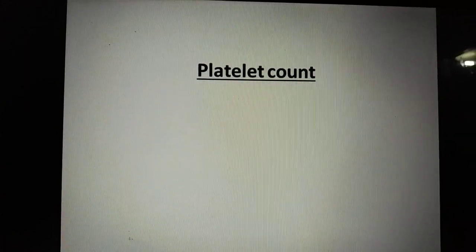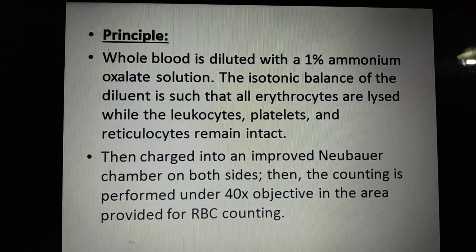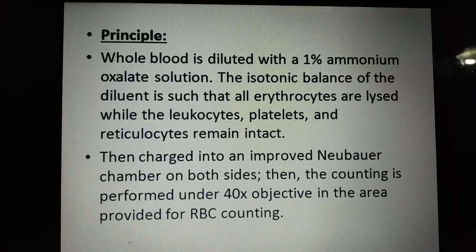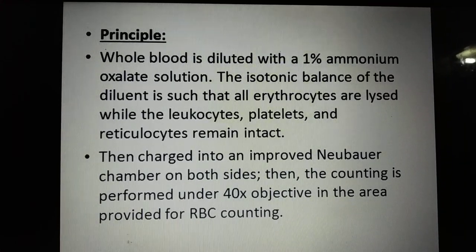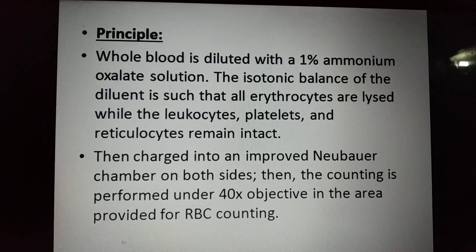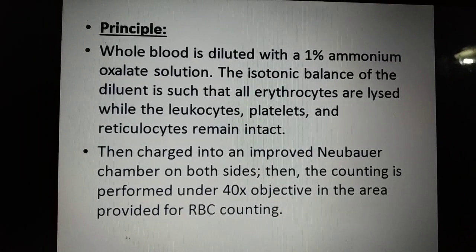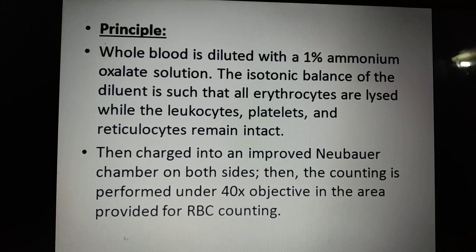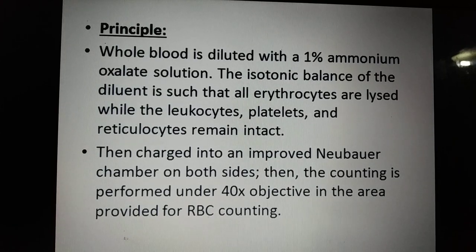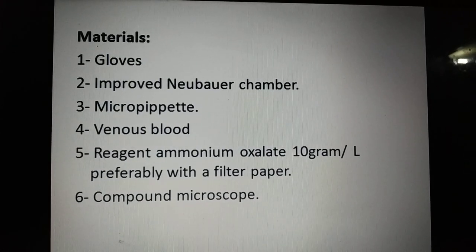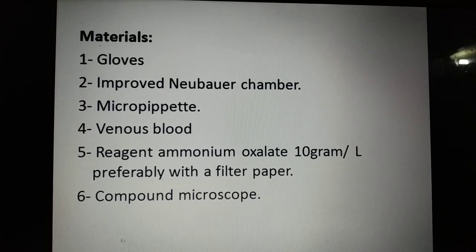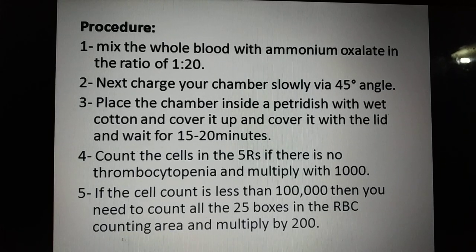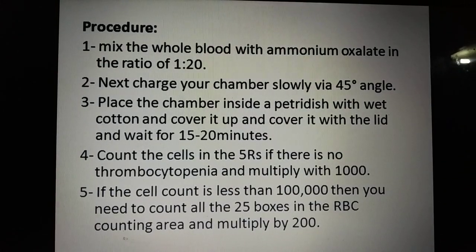Reticulocyte count decreases in aplastic anemia, anemia of chronic disease, iron deficiency anemia with deficient red cell production, thalassemia, sideroblastic anemia, anemia with chronic renal failure, and acute leukemia. Now, regarding platelet count: whole blood is diluted with 1% ammonium oxalate solution. The tonicity of this solution is such that all erythrocytes are lysed while leukocytes, platelets, and reticulocytes remain intact. The sample is then charged into an improved Neubauer chamber on both sides and counting is performed under 40x objective in the RBC counting area. Equipment needed: improved Neubauer chamber, micropipette, venous blood, and ammonium oxalate reagent.